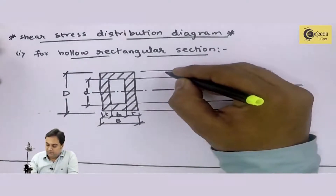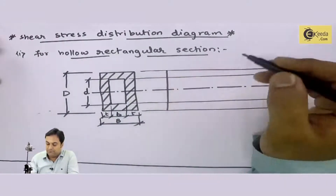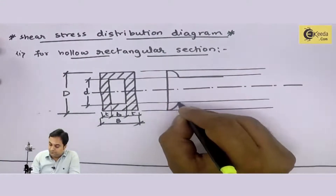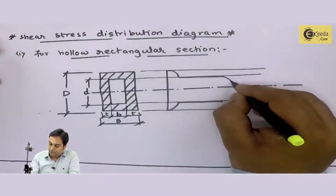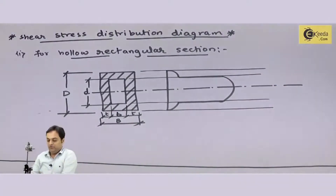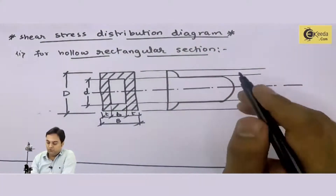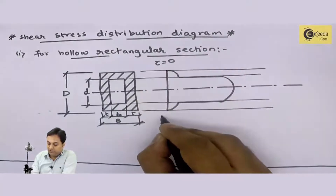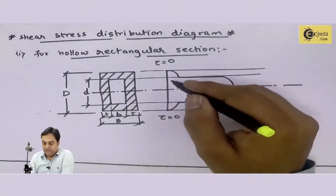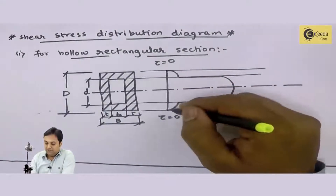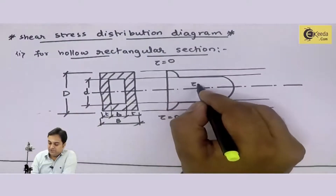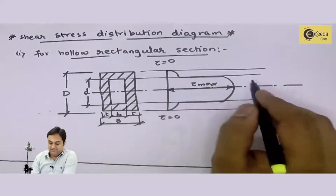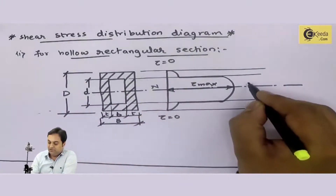For this hollow rectangular section, I draw a shear stress distribution diagram — see the nature of the diagram. If you see this diagram, at the top and at the bottom layers, the shear stress is equal to zero. We denote shear stress by the letter tau. Shear stress is zero at the top and bottom layers. After this, shear stress is maximum at the center position — it is maximum at this position.